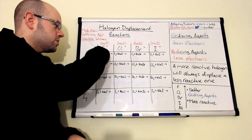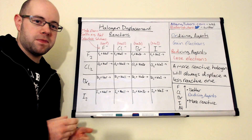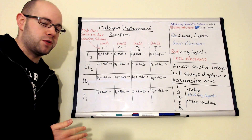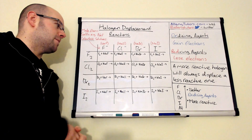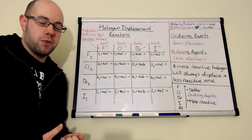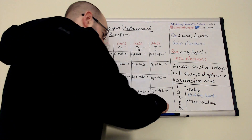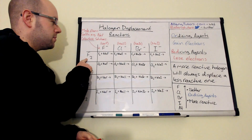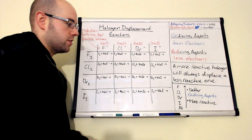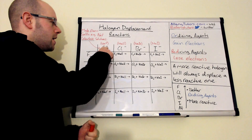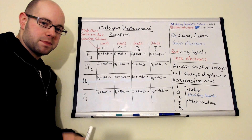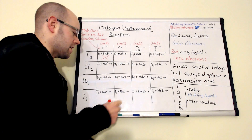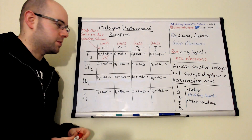If we get a reaction, I'm going to write down the products and what you would see. If we don't, I'll just put a red cross — and actually the vast majority of these won't give a reaction. Starting with F2 — fluorine. React that with F⁻: because they're equally as powerful, we effectively get no displacement reaction, so we get no reaction at all.